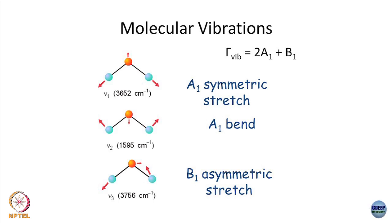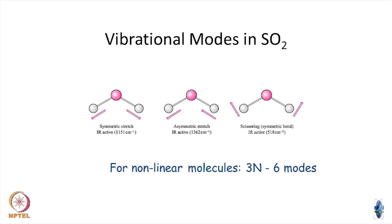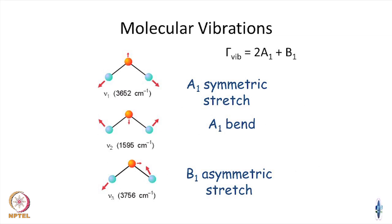Just to show that experimentalists have seen these frequencies which are non-degenerate — a1 symmetric, a1 bending, then b1 asymmetric stretch — and then there are linear molecules which have 3n minus 5 vibrational degrees of freedom. Similar to the water molecule, there are other molecules, and methane of course; briefly mentioning the Td symmetry, which has 3n minus 6 vibrational modes. Some of these frequencies, for example, are all in the infrared regime, in units of inverse centimeters.